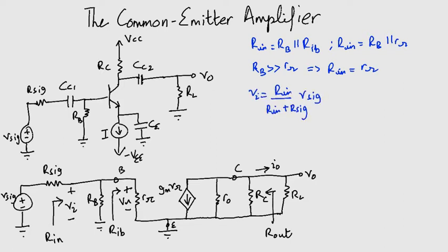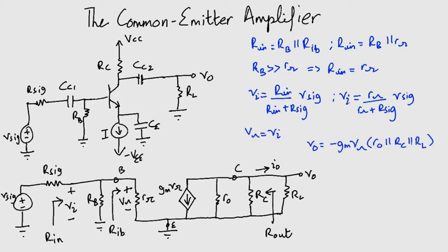VI is a fraction of the voltage Vsig appearing across the input side of the amplifier. So we can write a voltage divider equation for it. Substituting the value of RIN gives us this expression. Now notice that VPI equals VI. This is because RB and RPI are in parallel.